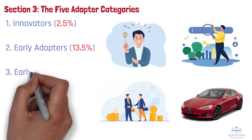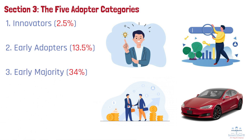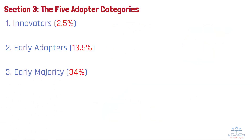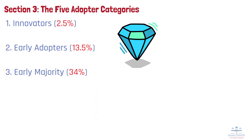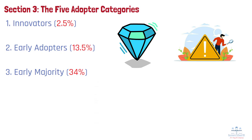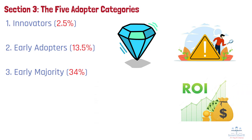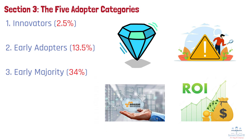Group 3: Early Majority, 34%. The early majority waits until there's solid evidence of value. They're pragmatic, risk-aware, and seek proven performance before trying something new. To reach this group, businesses need strong testimonials, clear ROI, and simplified onboarding. Amazon Web Services (AWS) grew dramatically after the early majority saw case studies from other successful tech companies.